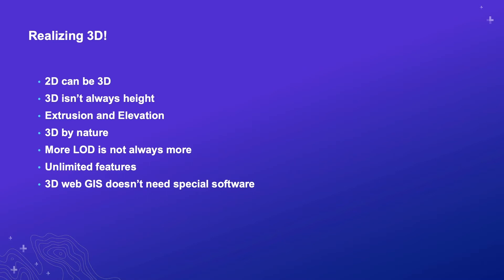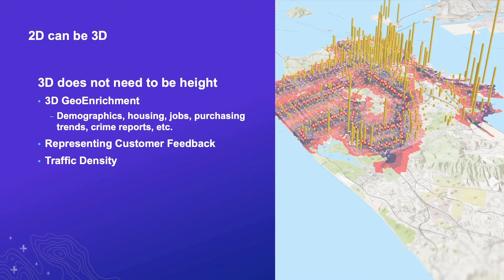When you're working in the web GIS, I want you to keep the phrase "unlimited features" in mind — I'll go over that in a minute. And 3D web GIS really doesn't require special software; it's something all of us can get into. So, 2D can be 3D. Most of the data we work with in the ArcGIS platform is going to be two-dimensional, but that doesn't mean it cannot be used in a 3D capacity.